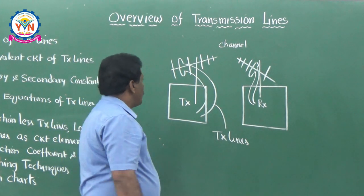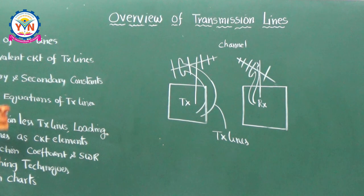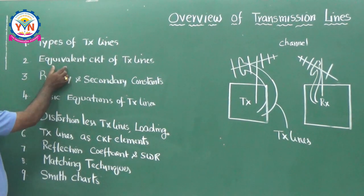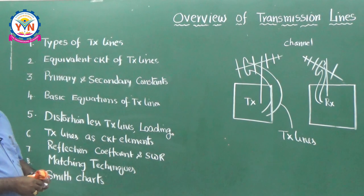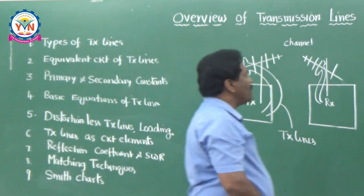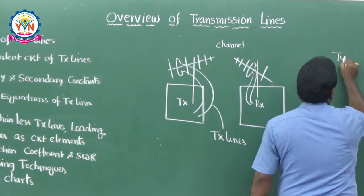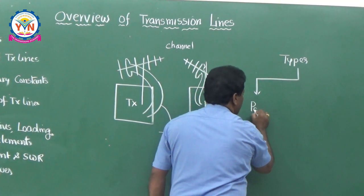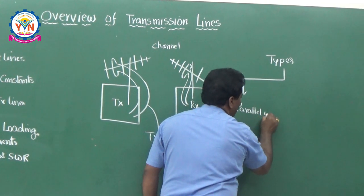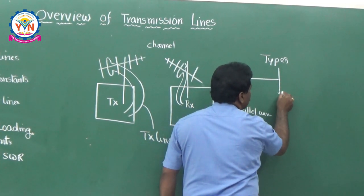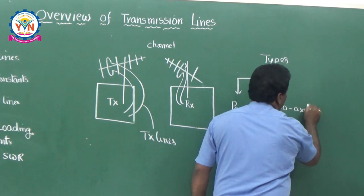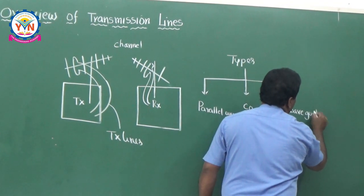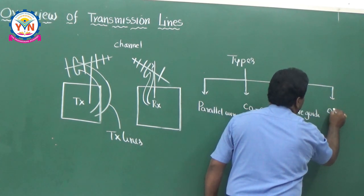Now let us see the contents one by one. Coming to the first topic — types of transmission lines. The types are: first, parallel wire type transmission line; second, coaxial cable; third, waveguides; and the latest communication the people are preferring is optical communications.